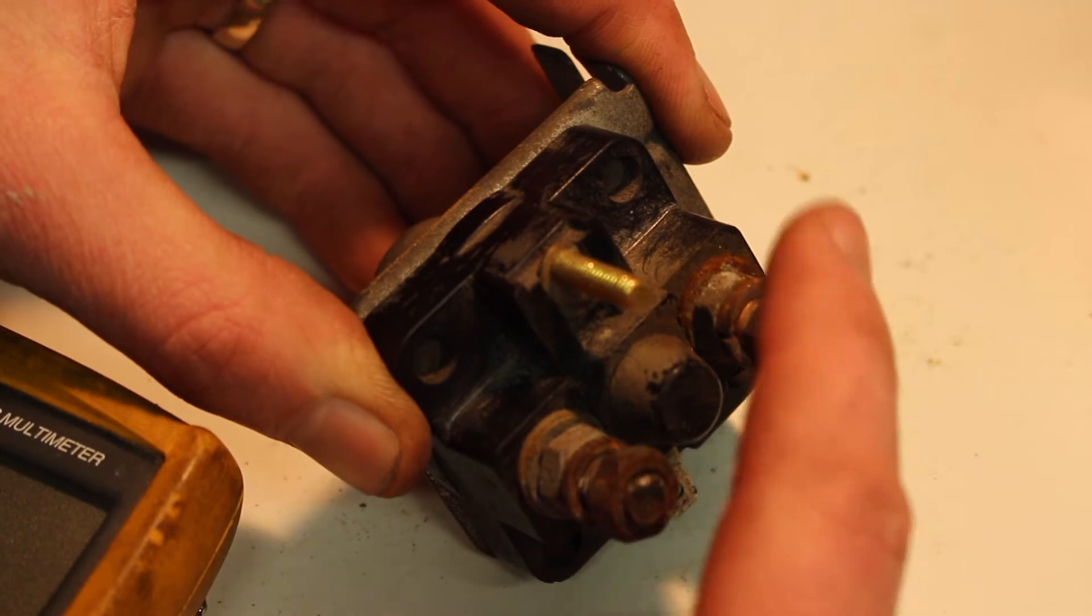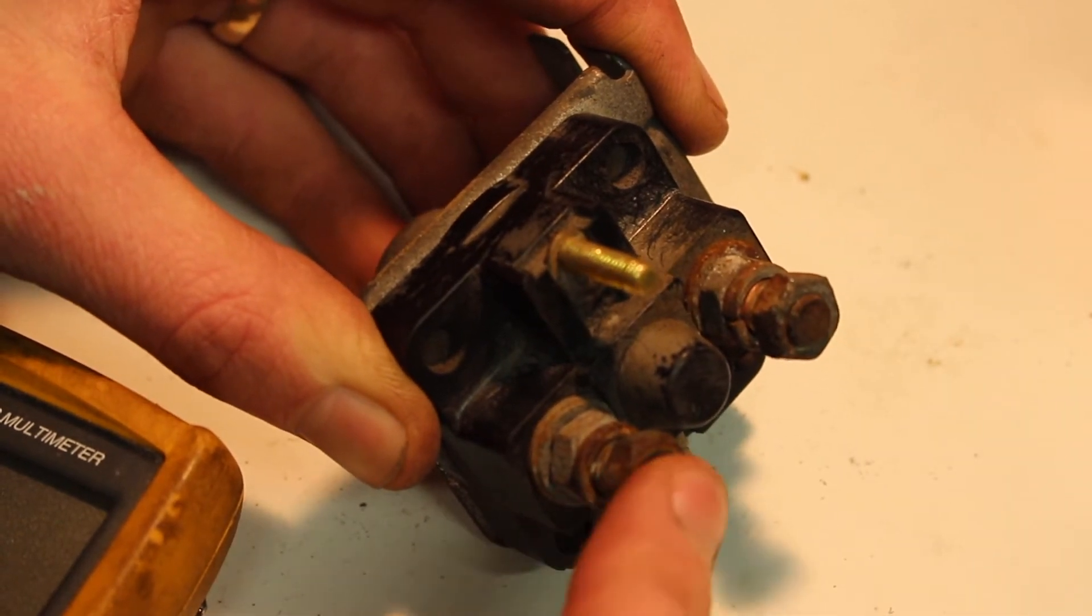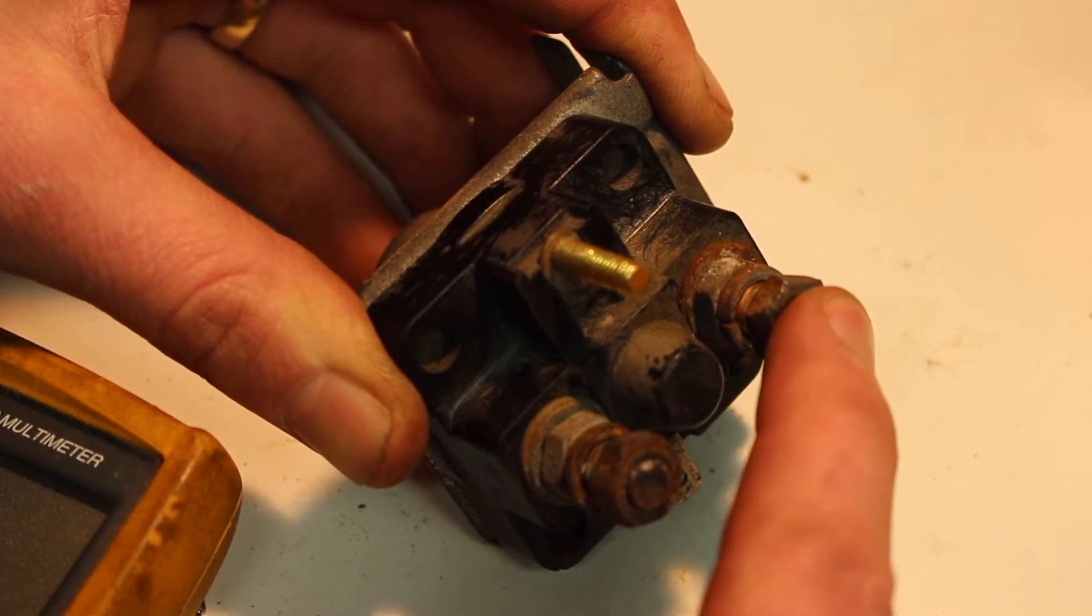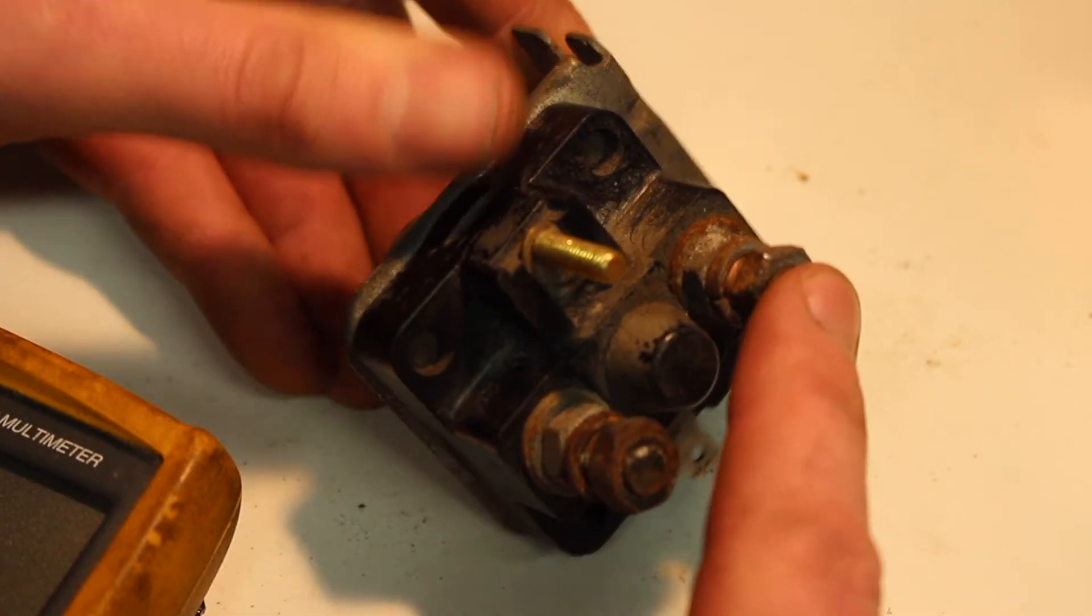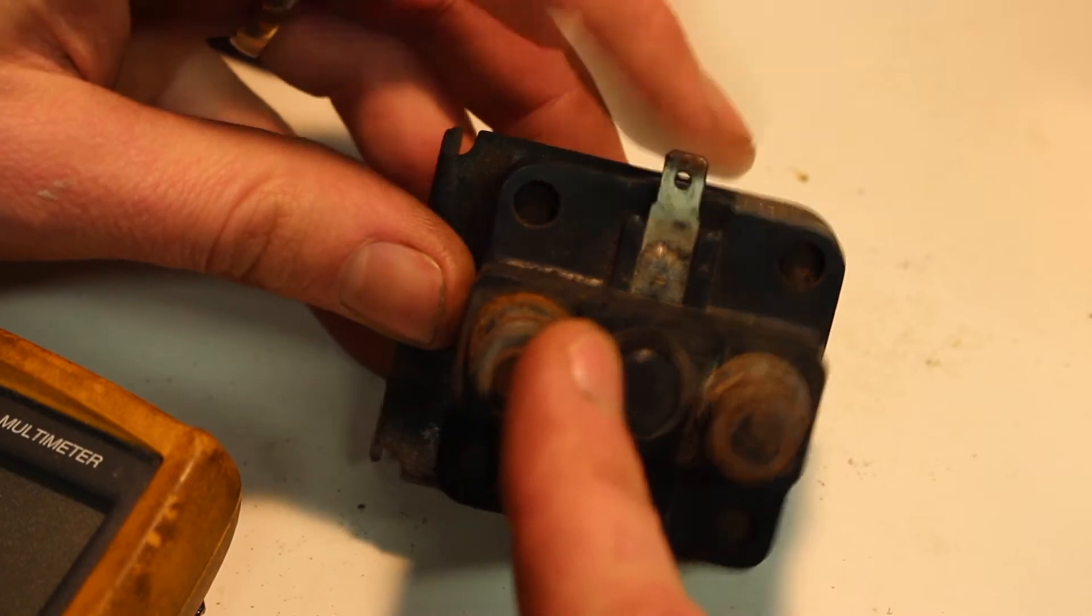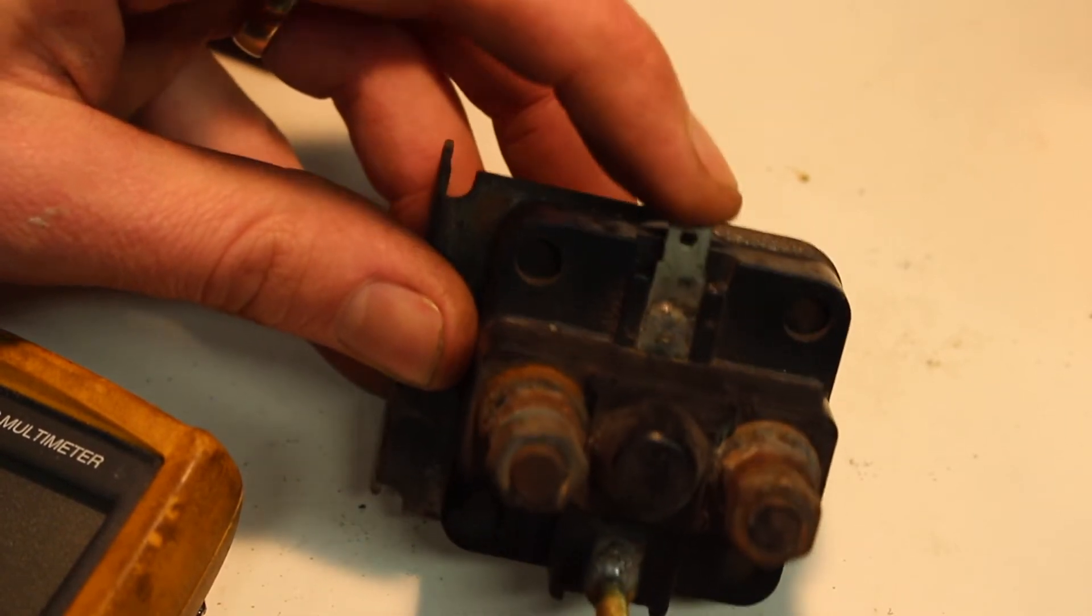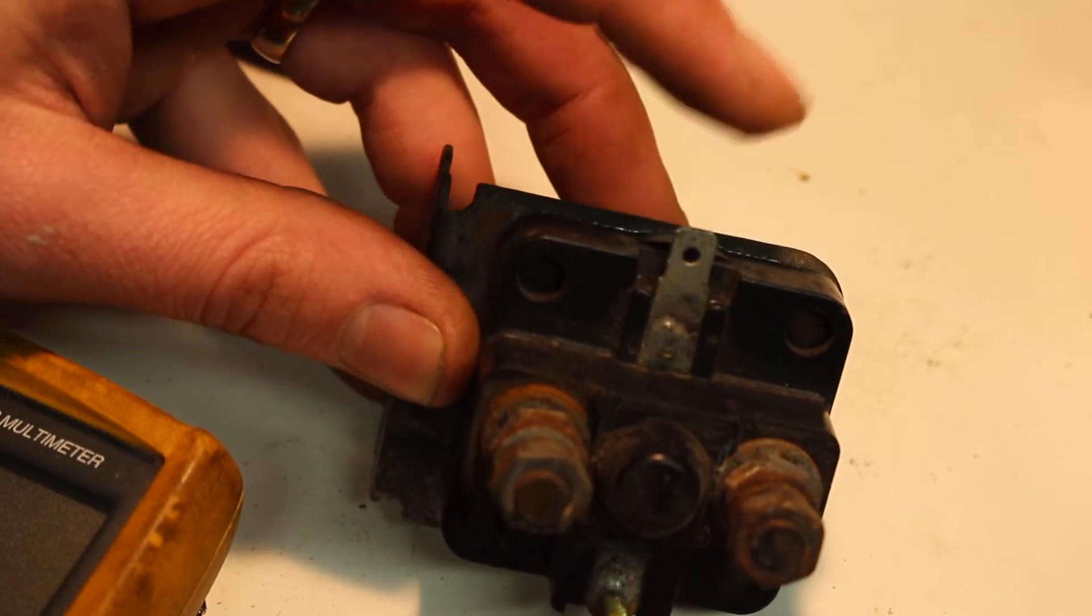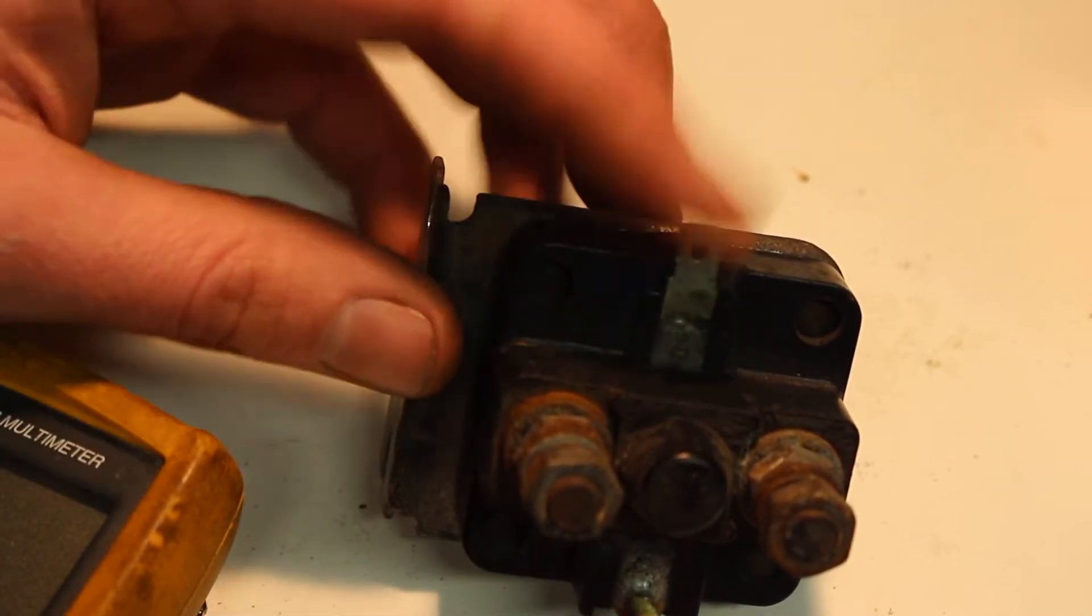So the two big terminals on the solenoid are for the battery lead directly from the battery and then the lead that goes directly to the starter motor. We have a couple of other connections. We generally have a small spade connector and that's used for the power that comes directly from your key switch and it's used to energize the solenoid, so that's our 12 volts in.